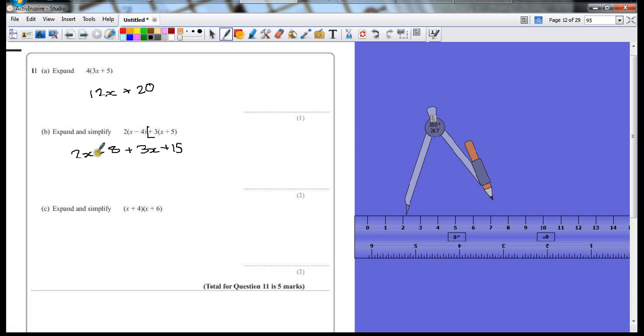Now to simplify, gather the terms together. 2x and 3x. 2x is here, plus 3x here, is going to give me 5x. So I'm going to put my answer over here as soon as there is working out. Minus 8, add 15. Or 15, take away 8, is going to leave me with plus 7. That's my simplify mark.